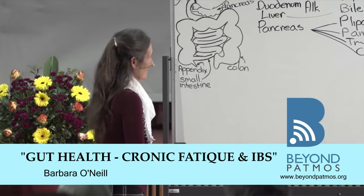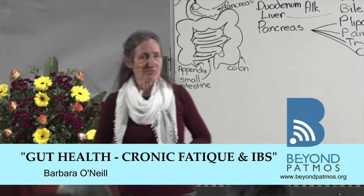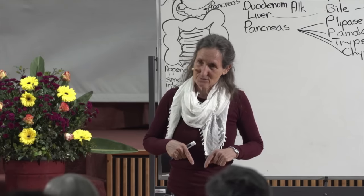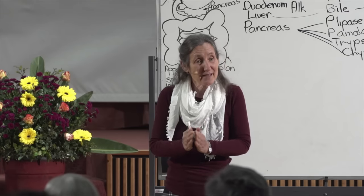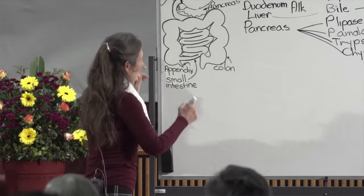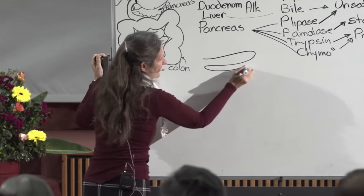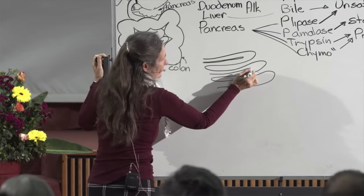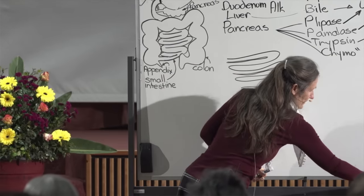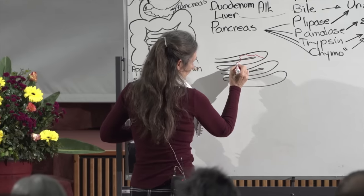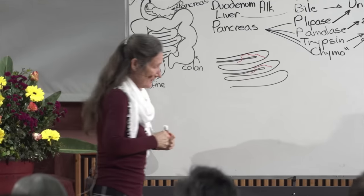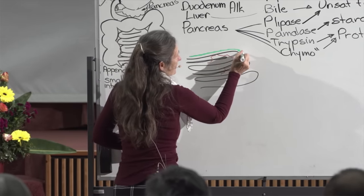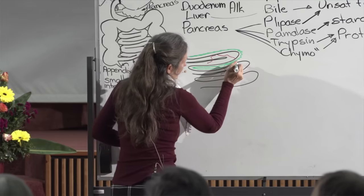We're arriving at the grand finale of digestion. Lining the small intestine are villi — up the middle of each villus is a lacteal, part of the lymphatic system, and throughout the villi is a blood capillary network. Covering the villi is a thick turf wall made up of Lactobacillus acidophilus and bifidus bacterium, and that thick turf wall plays a very important role in the final act of digestion.